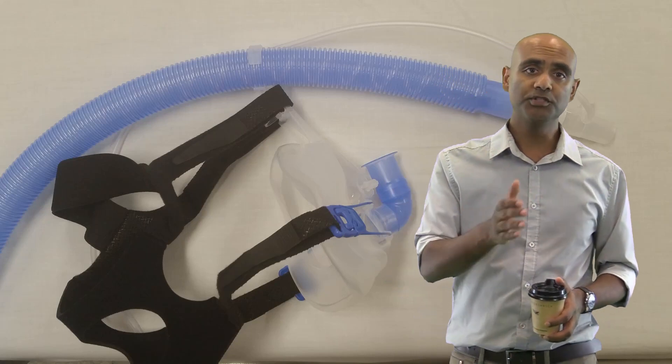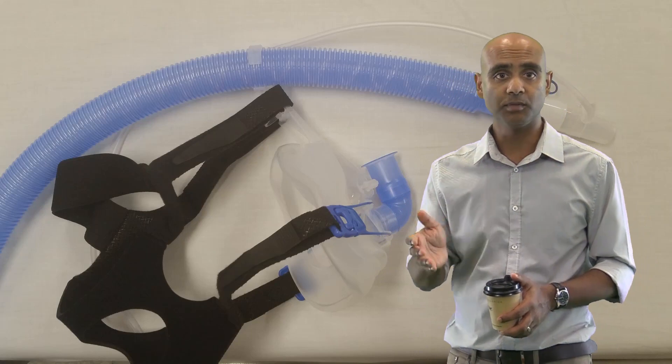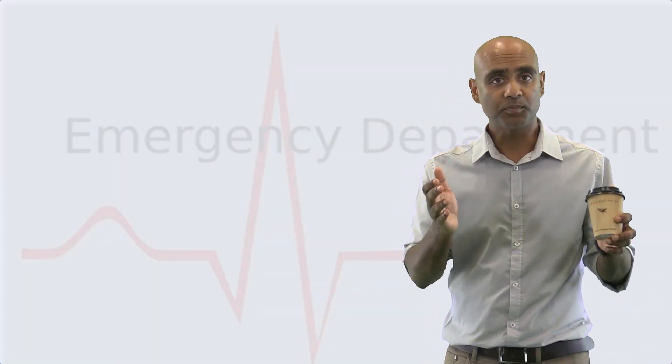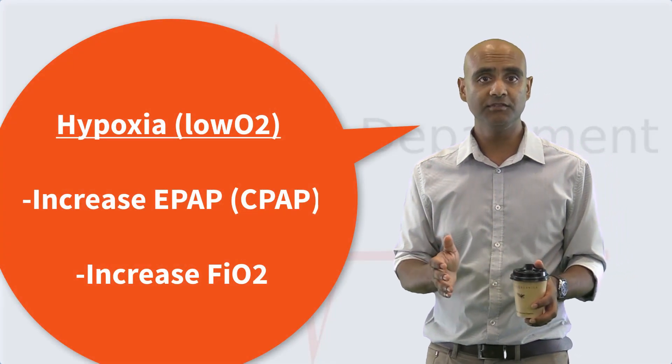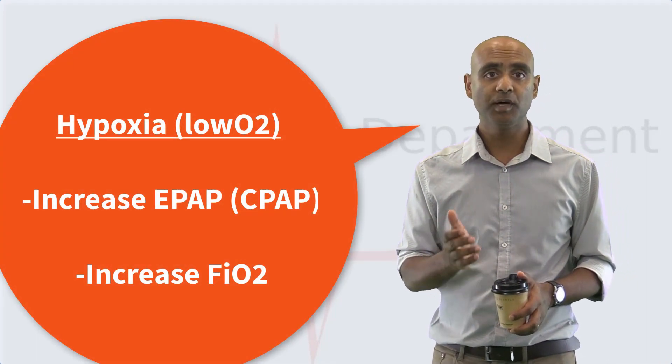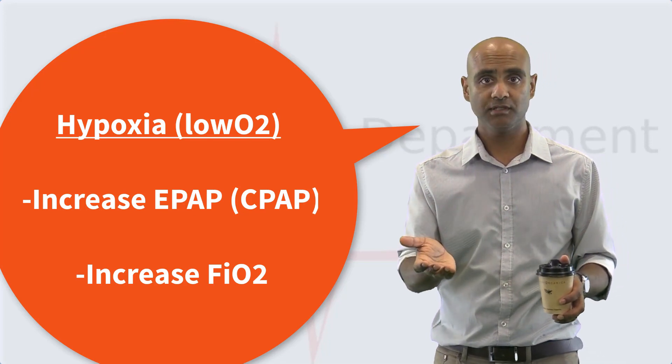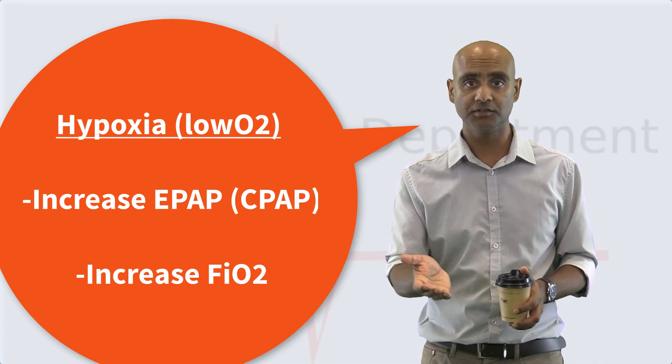The best way to approach a patient who's in respiratory distress is to think about the problem you're trying to fix. So if the primary problem is hypoxia then non-invasive ventilation can help by providing CPAP which is expiratory pressure, as well as an increased inspired oxygen concentration.